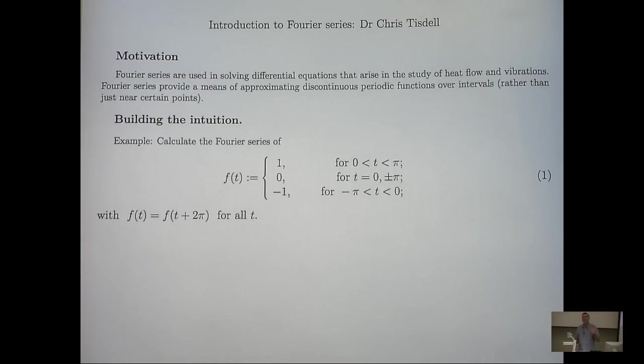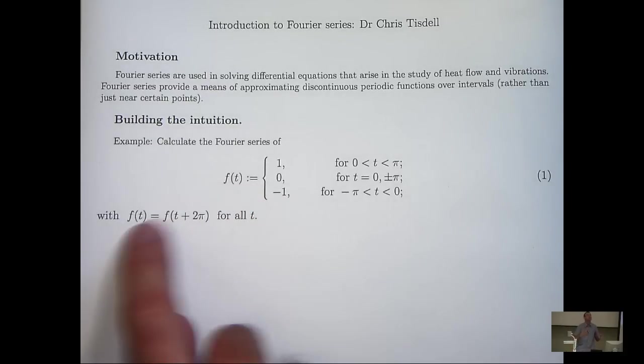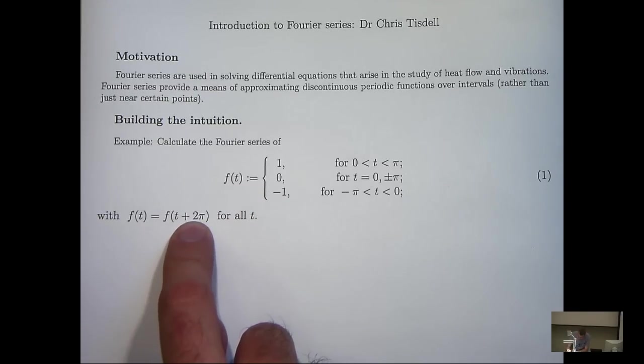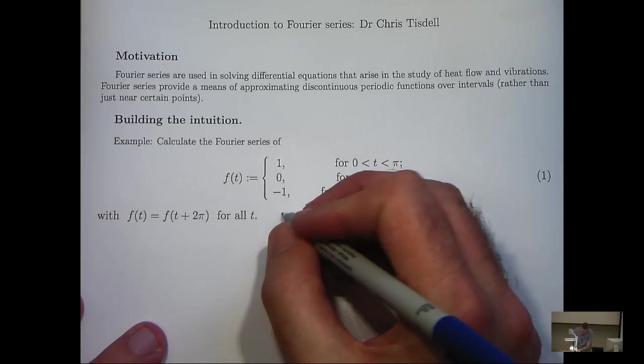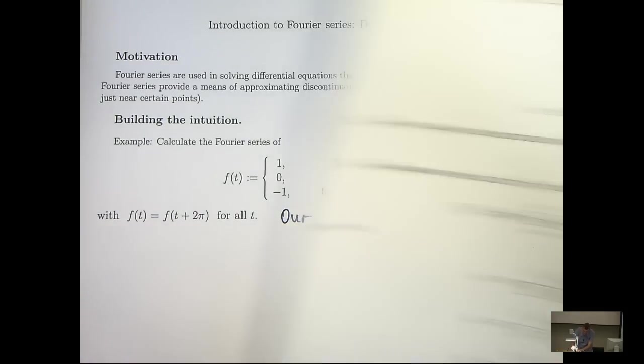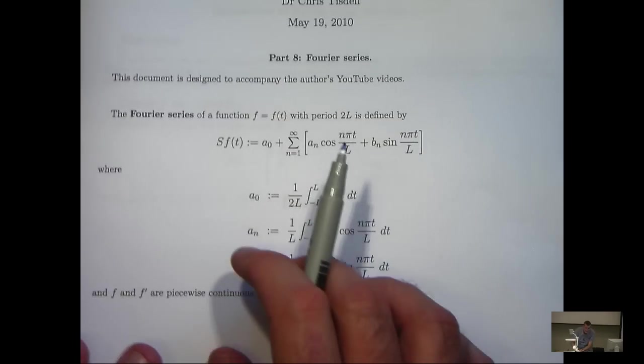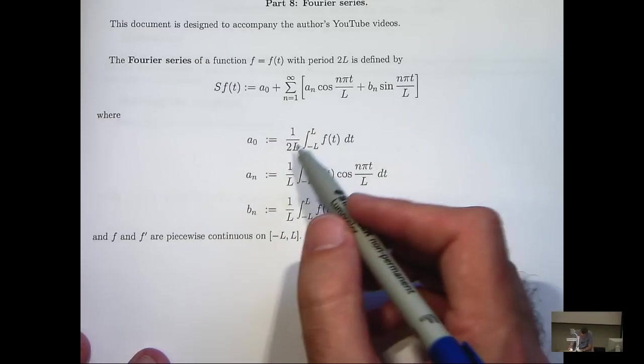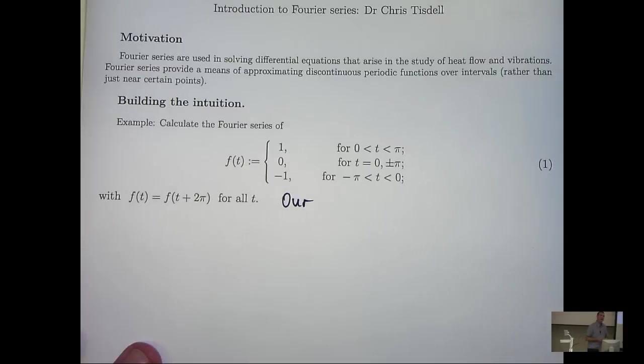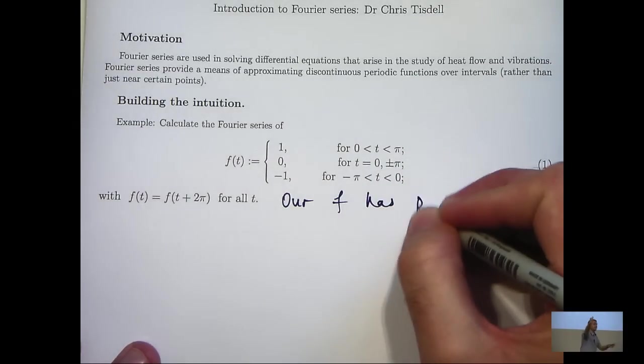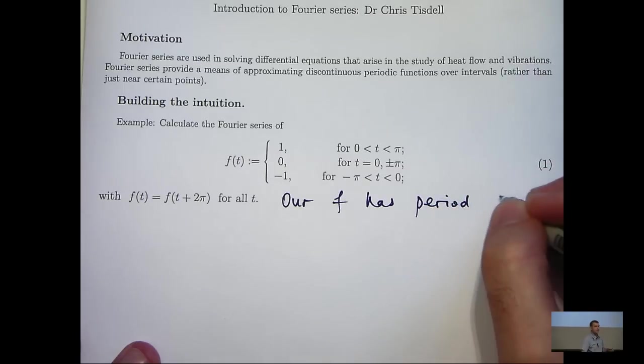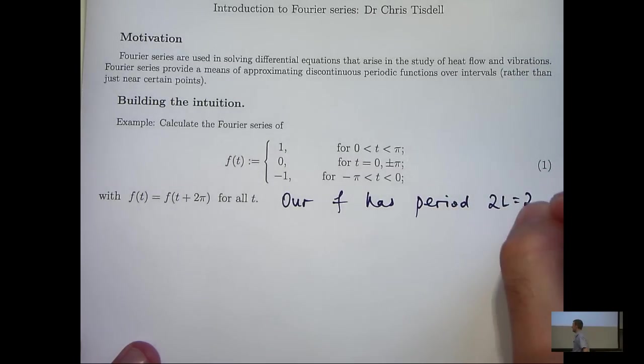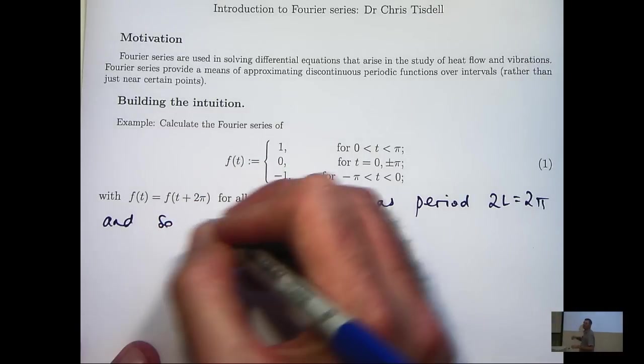But this video is very basic, very simple. We're just going to solve an example and show you how to quickly and easily calculate the Fourier series of a given function. So here we're asked to calculate the Fourier series of this function. The function is periodic with period 2π. So what I'm going to do is, first of all, recognize that to calculate these coefficients, we need big L. So big L is just half the period, and so L equals π.